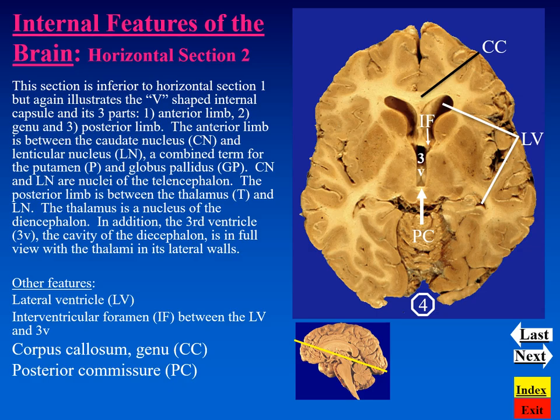At the posterior border of the third ventricle, we see a small band of white matter. This is a commissural band connecting the two sides of the hemisphere, and that is the posterior commissure. Here is our internal capsule again — anterior limb, posterior limb, and genu.